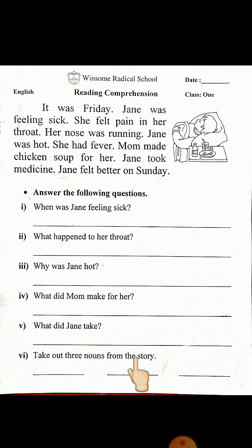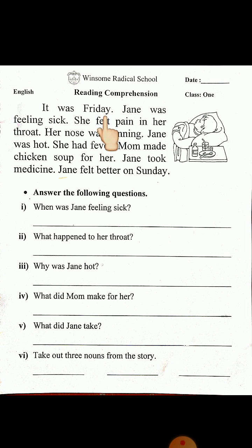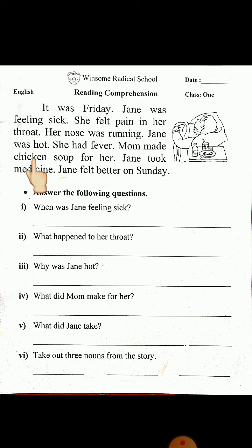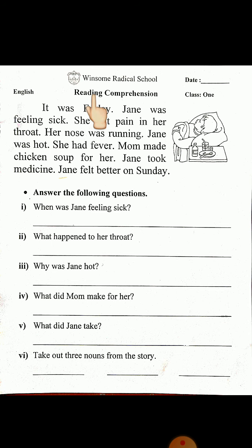Number six: Take out three nouns from the story. Come to this paragraph and find nouns. Friday — Friday is a noun. Jane — Jane is a noun. Throat — throat is a noun. Mom — mom is a noun. Chicken soup — chicken soup is a noun. Medicine is a noun. Sunday is a noun. So three nouns: Friday, Jane, throat.